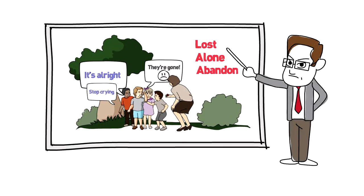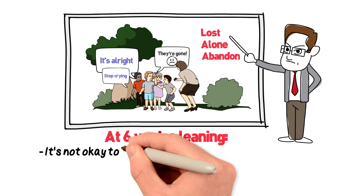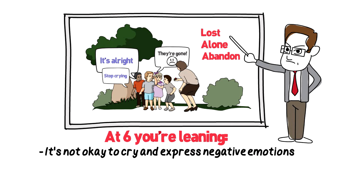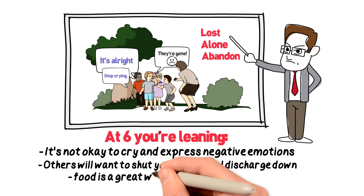At the age of six, you are learning that it's not okay to cry and express negative emotions. Others will want to shut your emotional discharge down because they feel uncomfortable, and food is a great way to comfort your upset.